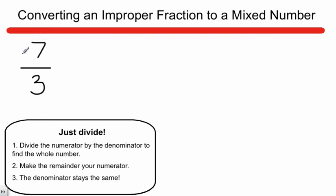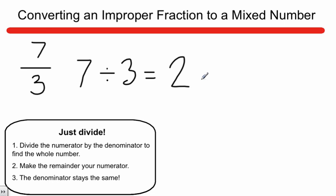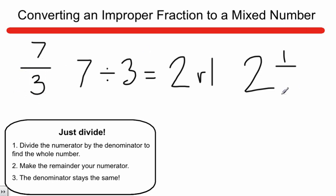So here I have 7 over 3. That means it takes 3 to make a whole. We're going to think of this as a division problem — take our numerator 7 and divide it by our denominator 3. How many groups of 3 can we take out of 7? We can take out 2 groups with a remainder of 1. To turn this into a mixed number, those 2 groups become our big number. The remainder of 1 becomes our new numerator, and the denominator always stays the same. So we've quickly gone from 7 thirds to 2 and 1 third.